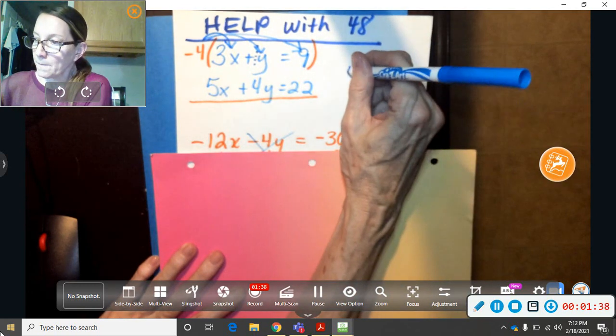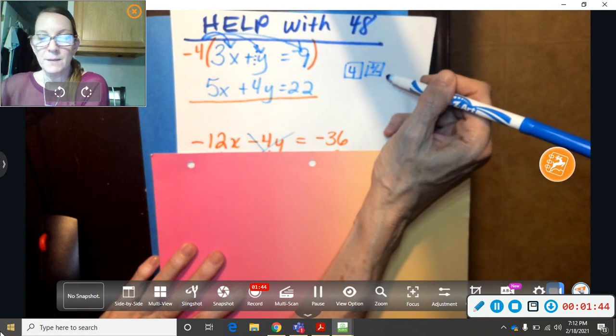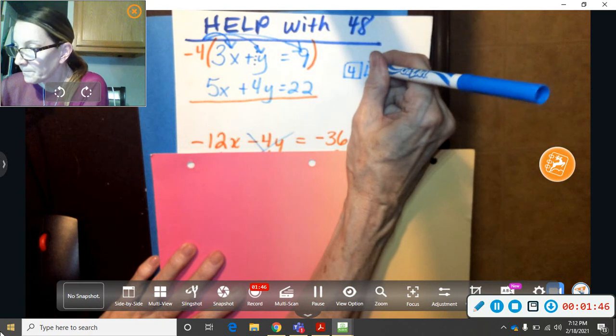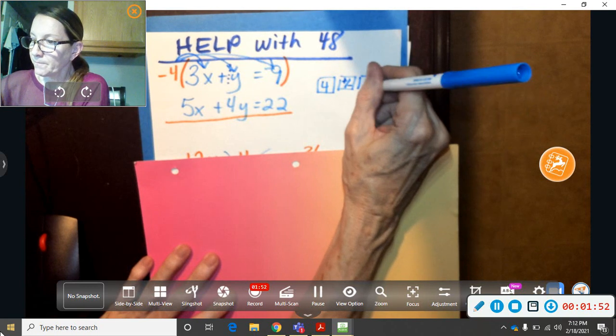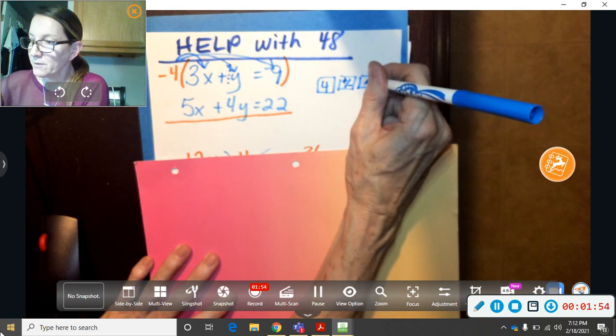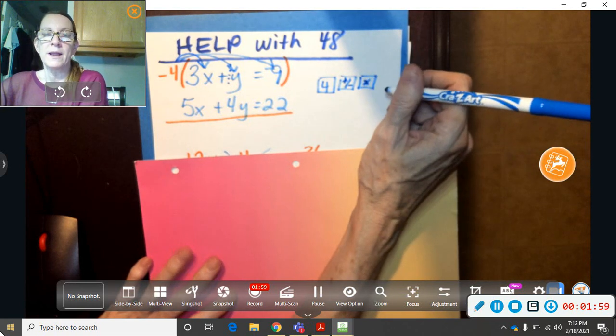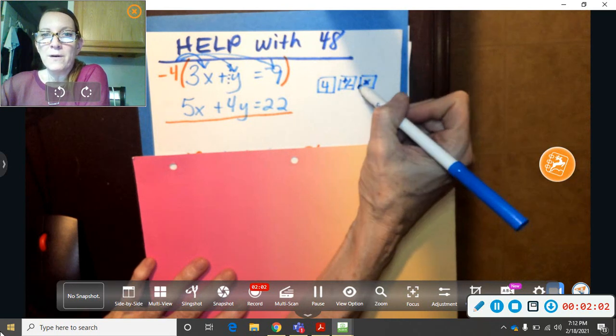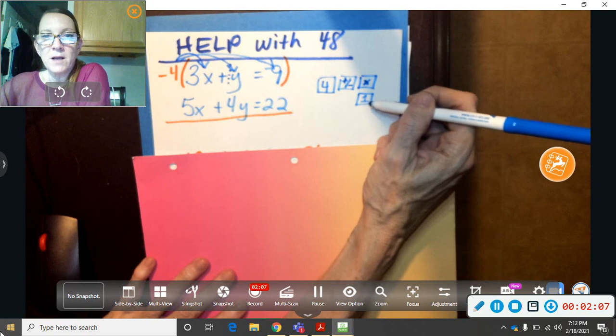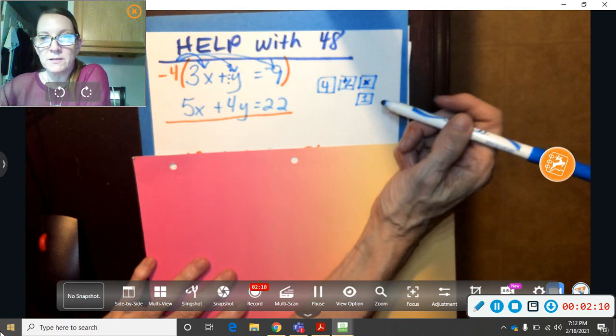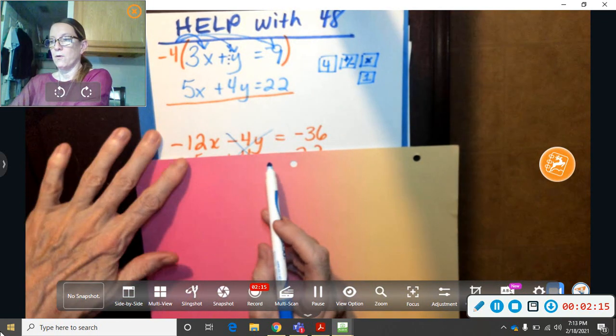So you go on the calculator, 4 and then you make it negative with that button, that positive negative button. So 4 negative, whatever your times button looks like, it's probably a star or an x, it depends on which kind of calculator you're using. 4 negative times 1. And it's just a positive 1, so you don't have to make it positive, it's just known that it's a positive 1. So 4 negative times 1 gives you negative 4y.